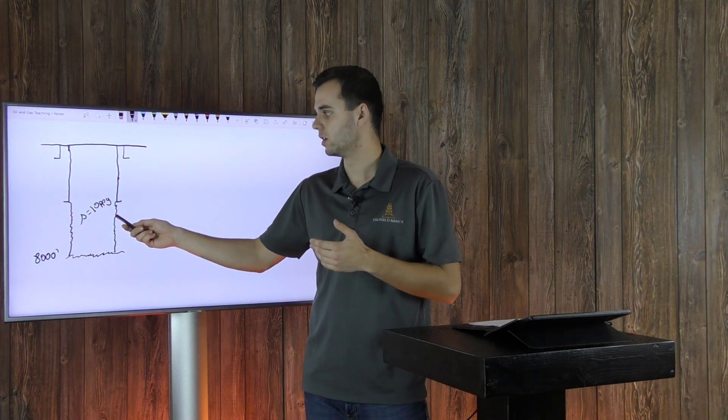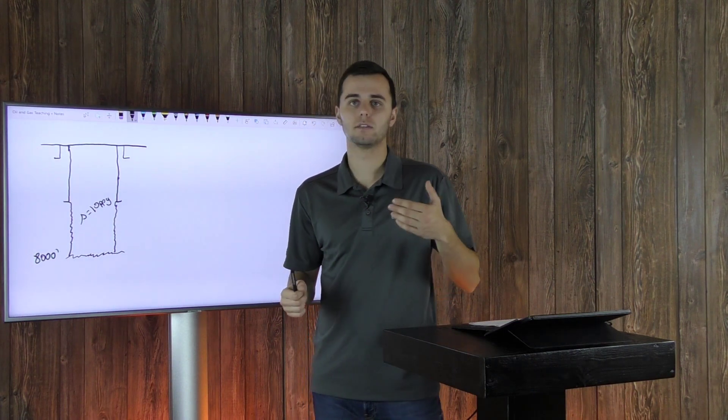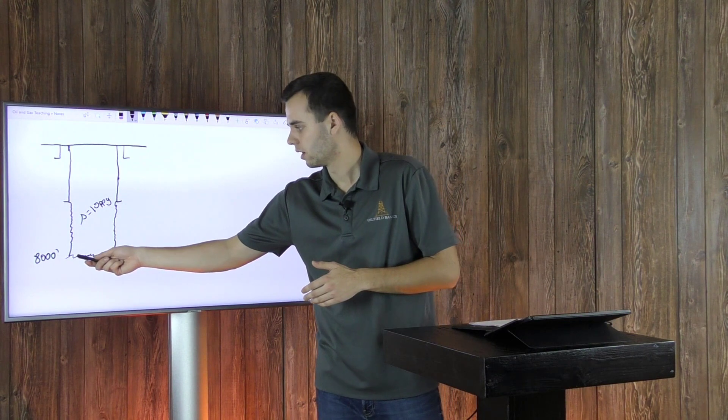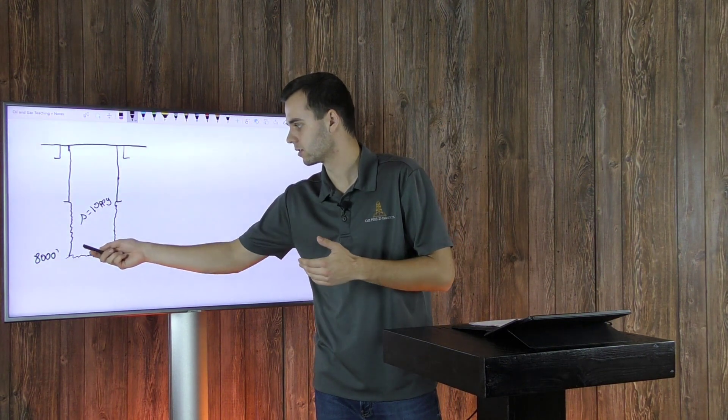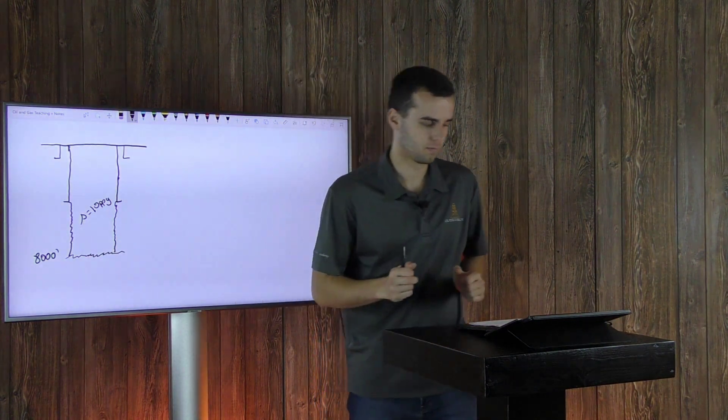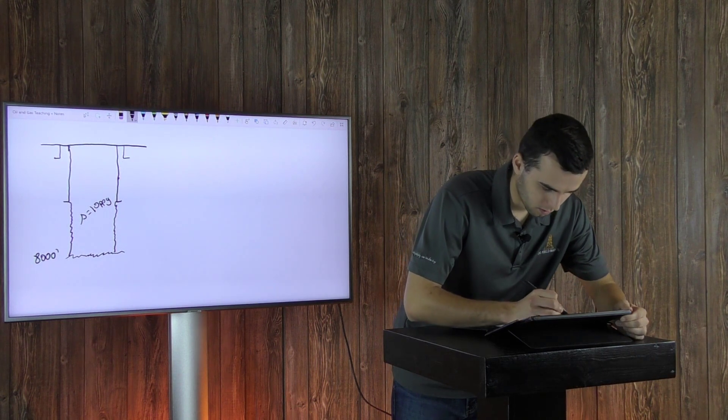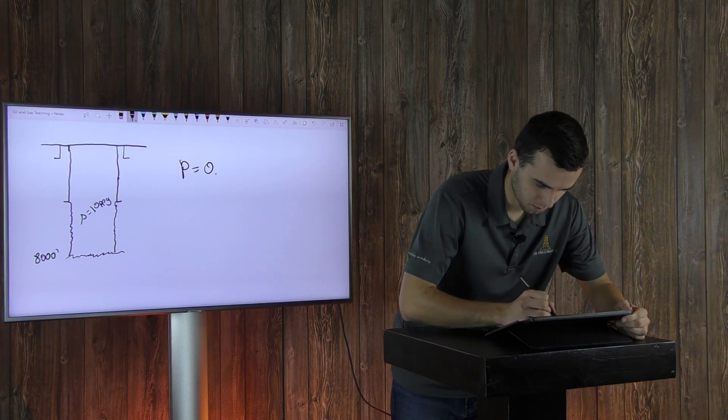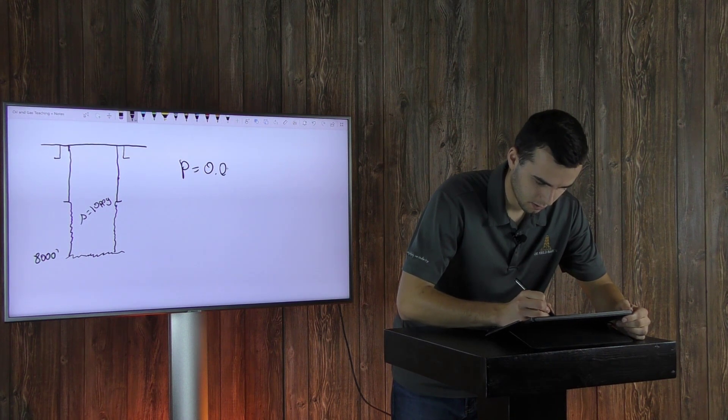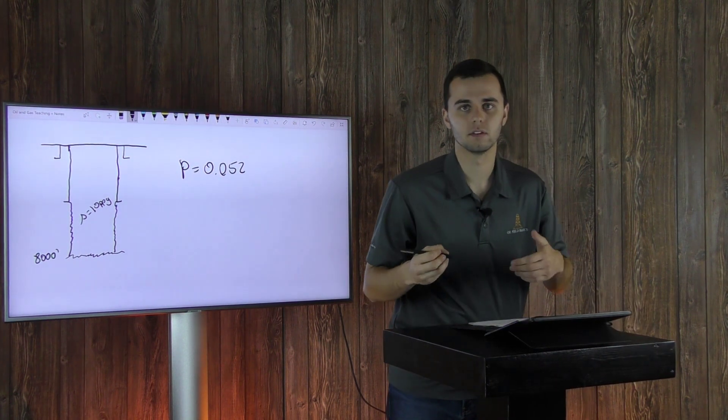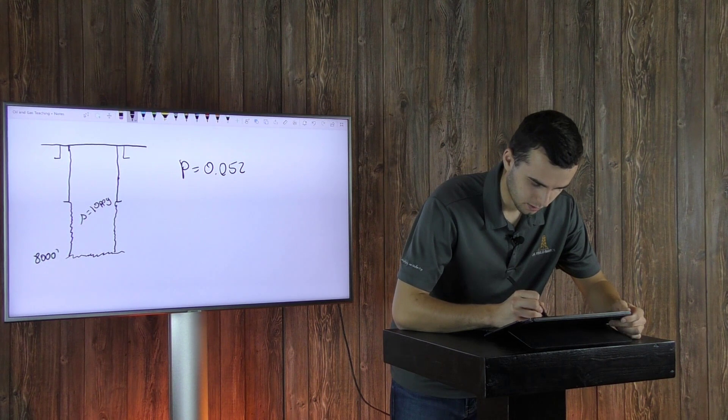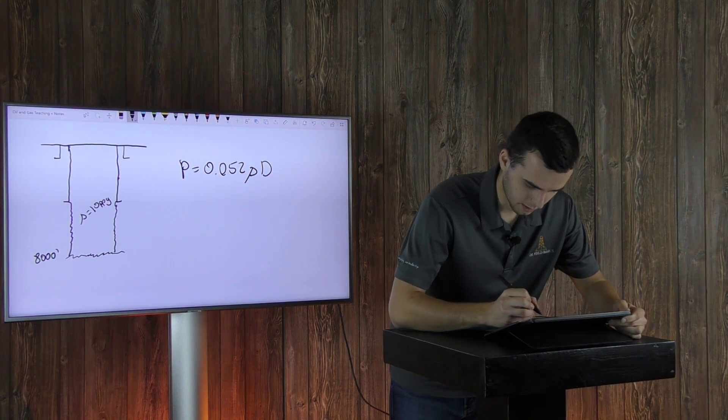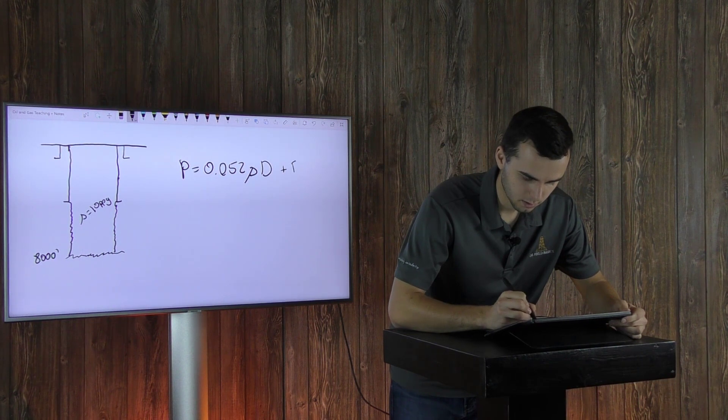Your wellbore is filled with a mud that is 10 pounds per gallon. And so how do you determine the pressure being exerted by your mud at 8,000 feet? Well, your pressure will equal 0.052, which is a constant, times your mud weight density, times your depth, plus p-naught.